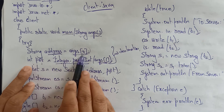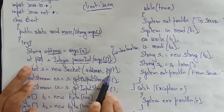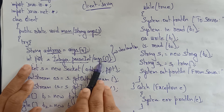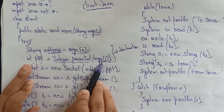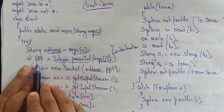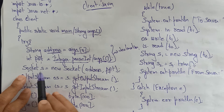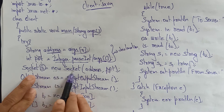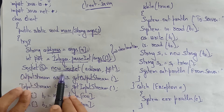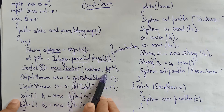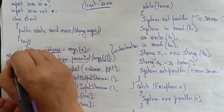So: String address = args[0], and int port = Integer.parseInt(args[1]) — args[1] is of String type so Integer.parseInt is used to convert it to integer. Then create a socket object: Socket s = new Socket(address, port). Socket object is now created.